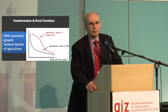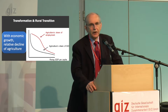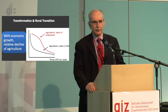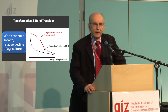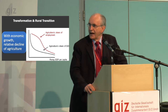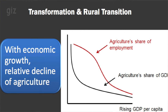Absolutely, agriculture has to grow, but it's going to grow slower than the rest of the economy, so it grows relatively. Agriculture's share of GDP falls, and agriculture's share of employment falls. In that schematic diagram, you'll note that the share of GDP falls faster than the share of employment, which means the gap between average labor productivity in agriculture and the rest of the economy does tend to widen with the initial stages of economic growth — which is somewhat problematic.